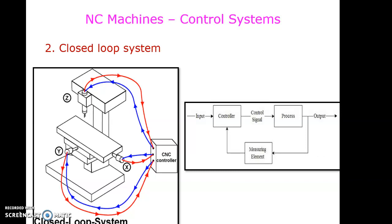Another difference is that the circuitry associated with a closed loop system is complex, whereas for an open loop system it is very simple. Being simple, open loop system circuitry is less costly, but closed loop systems are somewhat more sophisticated.